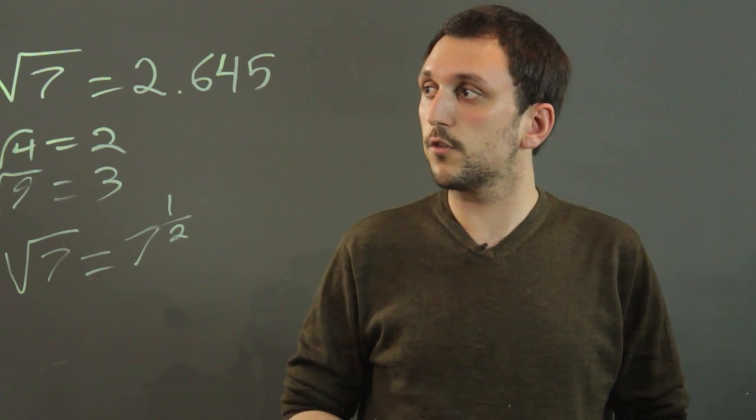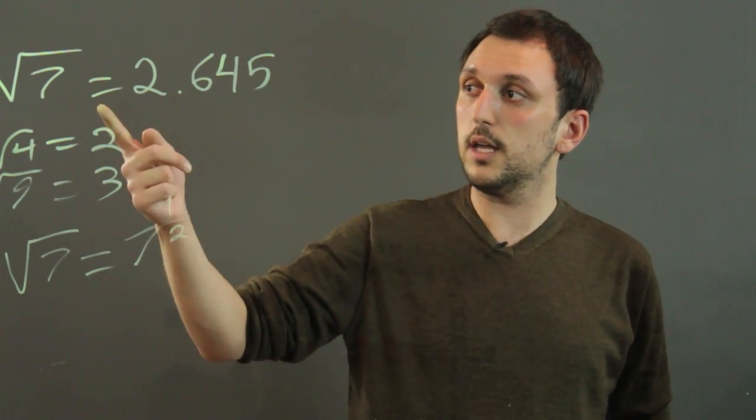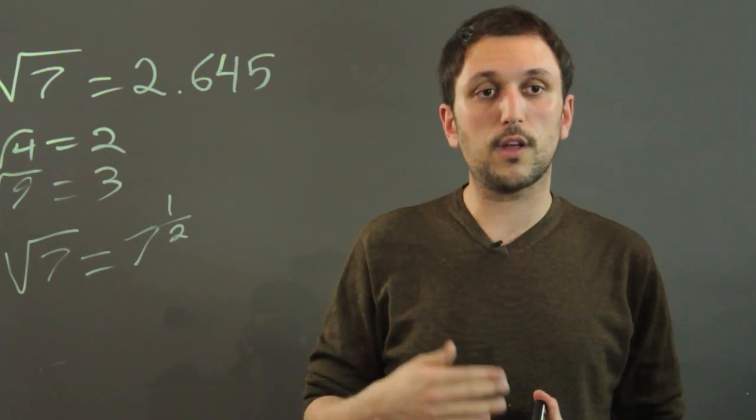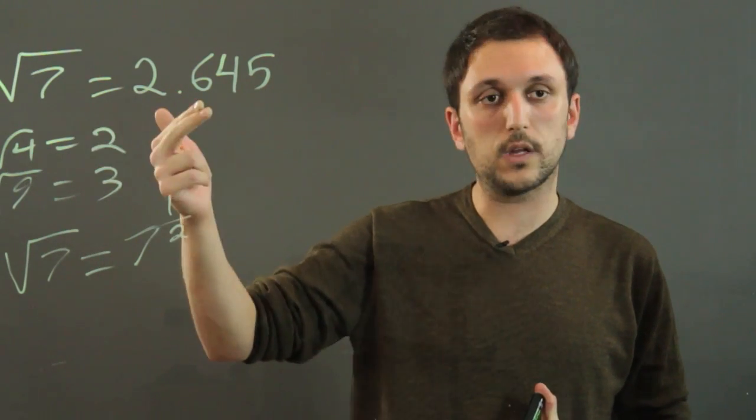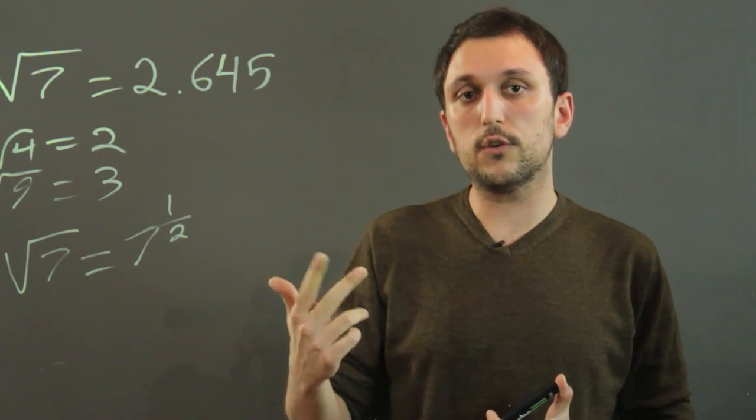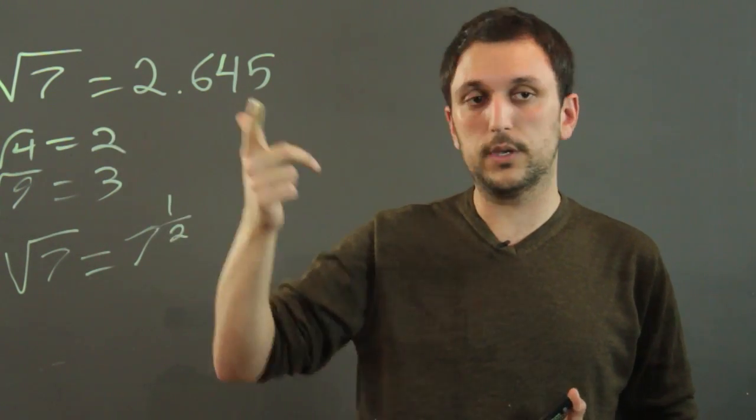So I'm Charlie Kasov and you just learned that the square root of 7 equals 2.645. Now most computers have a calculator in which you can calculate that. So find the calculator app on your computer or you can go on the internet and download a calculator to be able to calculate this.